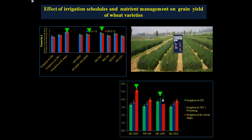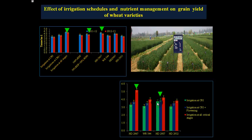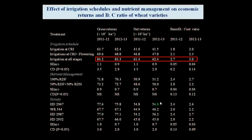In the case of SD 2987, when irrigation was given at all critical stages it was no doubt good, but when reduced to two or one irrigation there was not much reduction in yield. Therefore, SD 2987 is a very good variety for field conditions where water scarcity is a big problem.